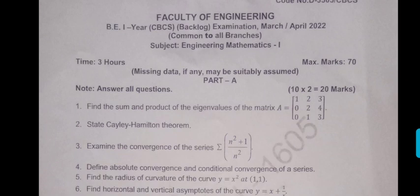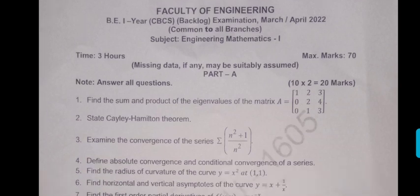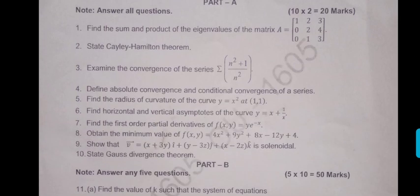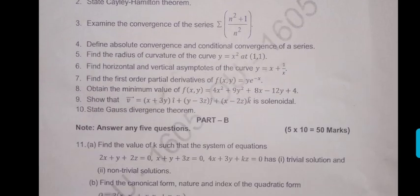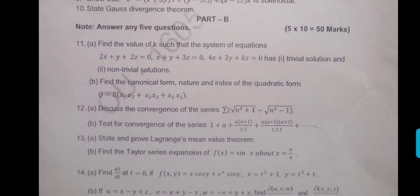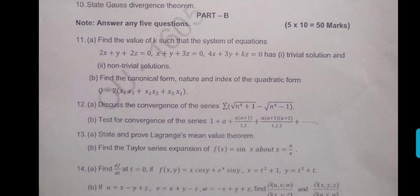For these students we have matrices. For current students, matrices are not there, it is there in M2. See the paper. So it is a 70 marks paper. We have short answers 10 into 2, that's 20 marks. Then part B we have to write 5 long answers, 5 into 10, that's 50 marks.